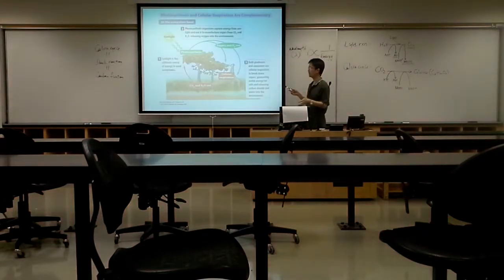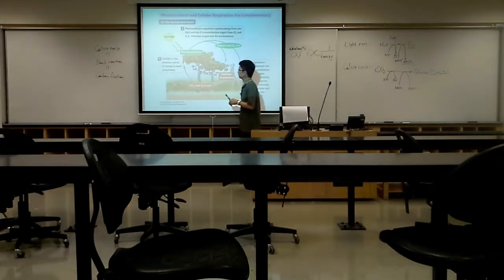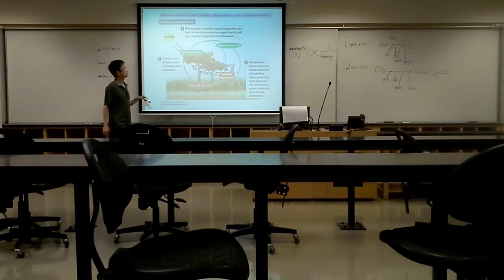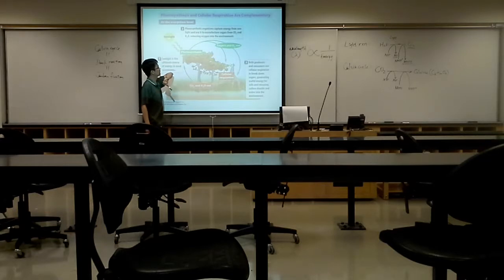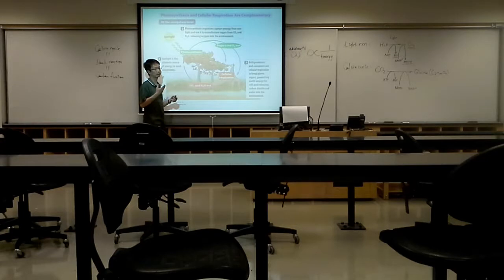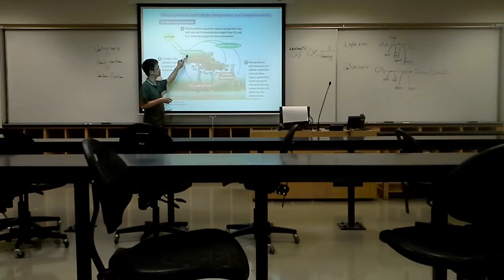This is what I meant by the circle of life. Sunlight is the ultimate energy on Earth. The plant absorbs sunlight and uses it for photosynthesis to make glucose, not only for consumers but also for themselves. Plants use photosynthesis to make glucose for their own cellular respiration to make ATP to support their life.